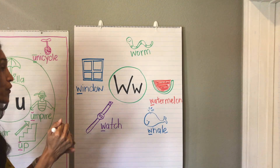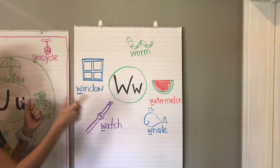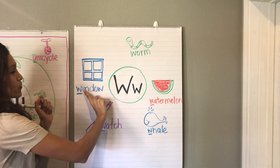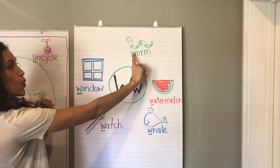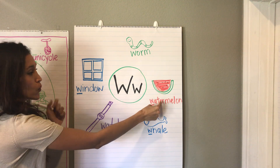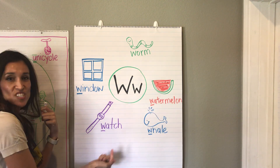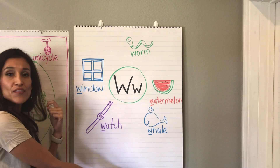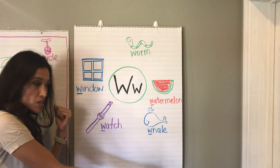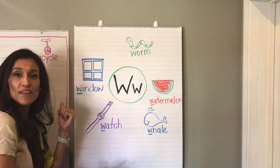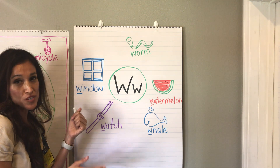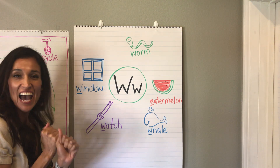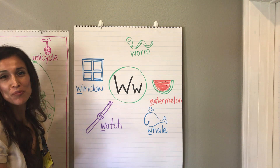So far for my letter W — remember the sound is W — we have window, worm, watermelon, whale, and watch. Now that we have the brainstorm started, I want you to try and fill this in with as many W words and pictures as you can find. Have fun with your W brainstorm. See you next time.